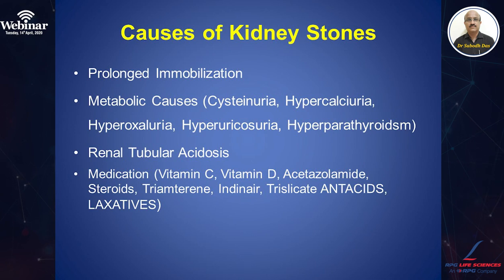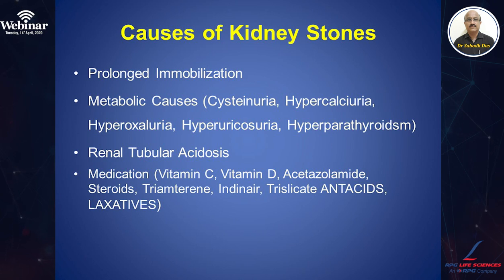Renal tubular acidosis is another metabolic disease that can give rise to urolithiasis. Various medications in excess can cause urinary stone disease, like vitamin C, vitamin D, acetazolamide, steroids, triamterene, and tricyclic antacids and laxatives.